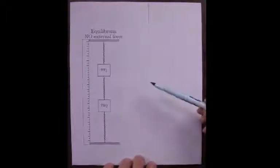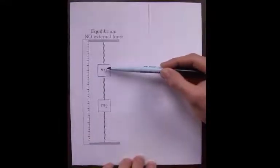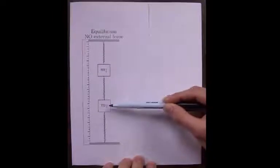Here's our ideal diagram of this system with spring one, mass one, spring two, mass two, and spring three.